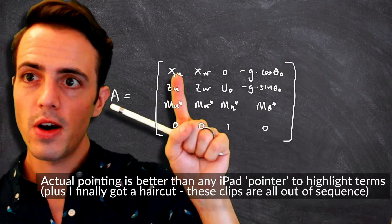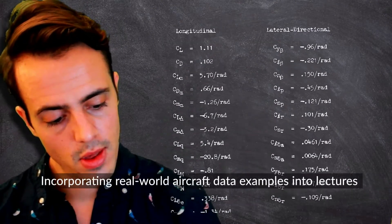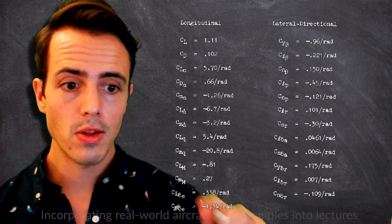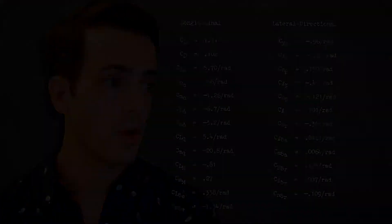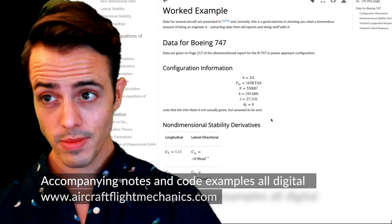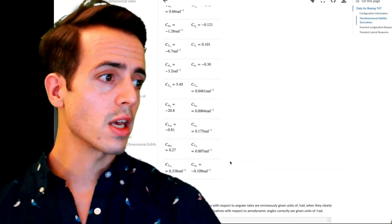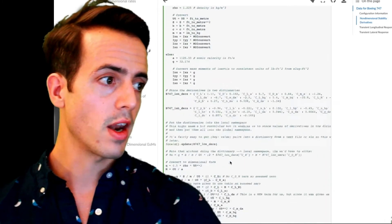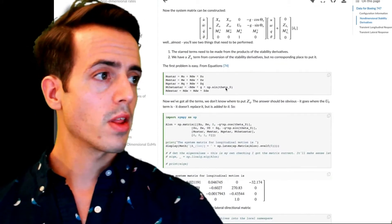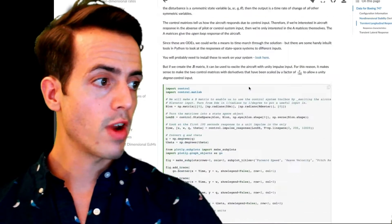So we need to find all of these derivatives based upon these non-dimensional ones that we've been given. So we've got the non-dimensional stability derivatives. We need to work out how we convert between them. For example, taking some data for a Boeing 747 and then getting the non-dimensional stability derivatives and doing the real nasty task of turning them into the dimensional stability derivatives, putting them into the longitudinal and the lateral directional matrix or matrices.